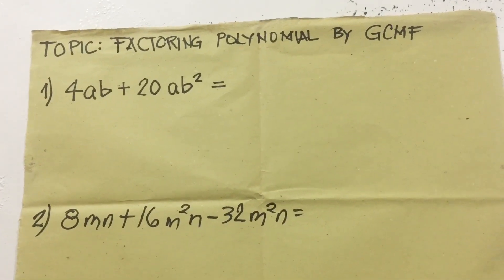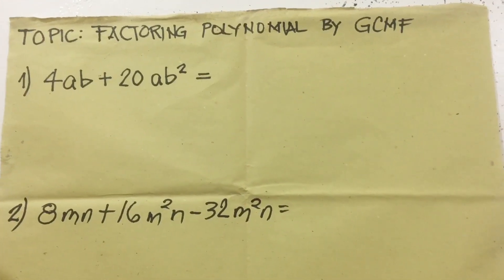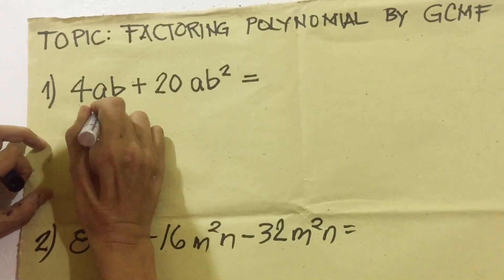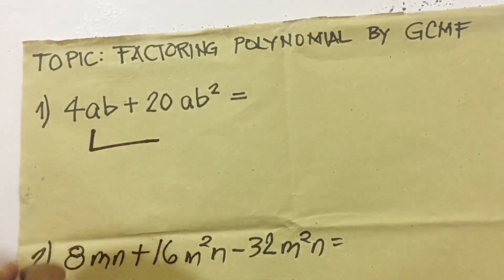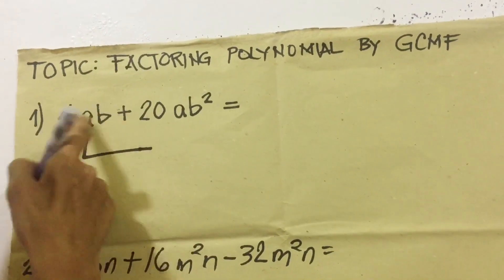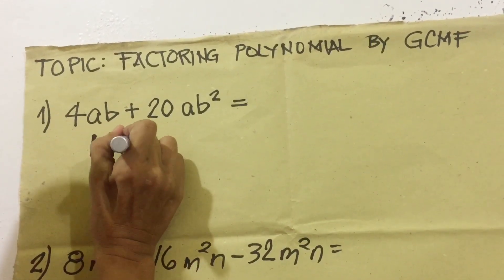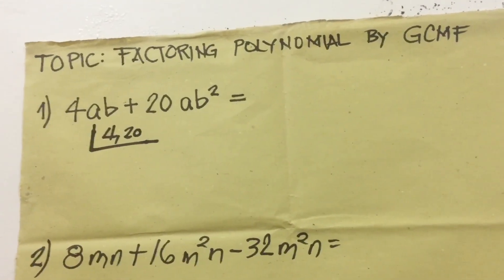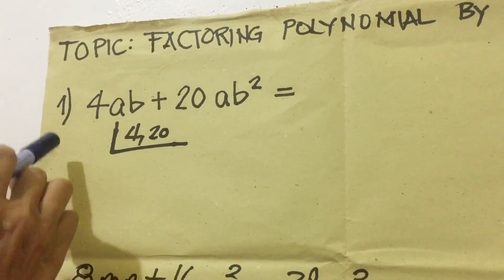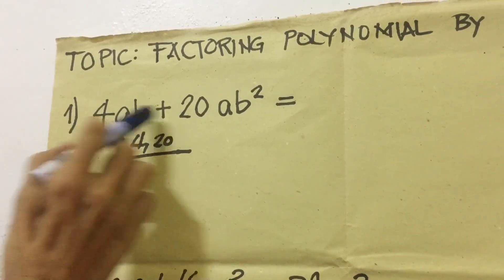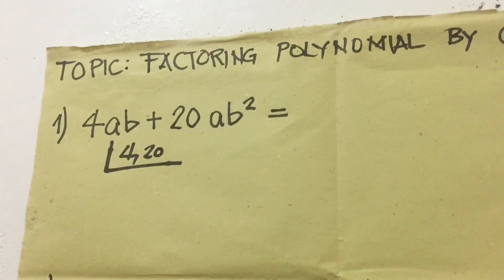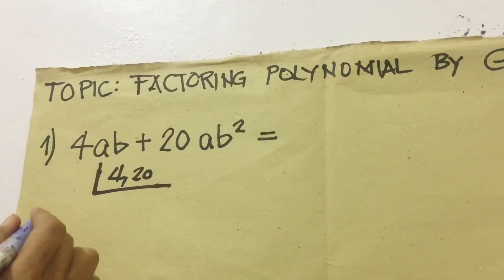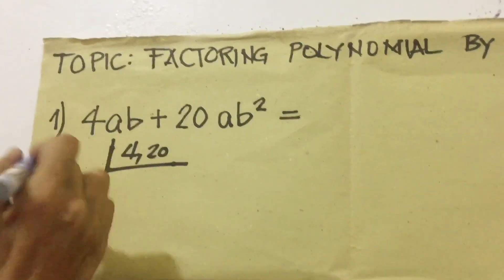Let's solve number one by using the GCMF, greatest common monomial factor. We use continuous division. We have 4 and 20 — we set aside the variable or literal coefficient for now. The greatest common factor of 4 and 20 is 4.